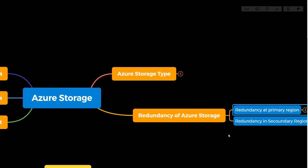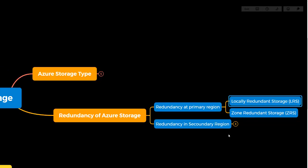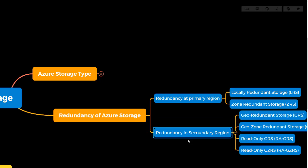The second type is redundancy on the secondary or pairing side for your primary regions. For the primary region, we have Locally Redundant Storage (LRS), where your data is stored three times in the same region. Next is Zone Redundant Storage (ZRS), where your data is stored across multiple availability zones with three copies.